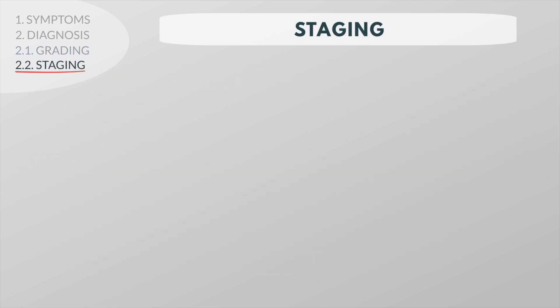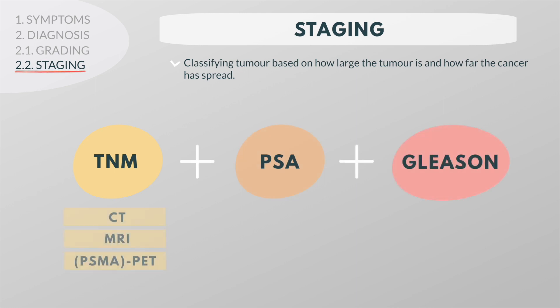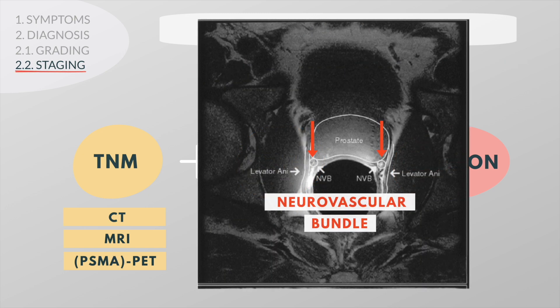The cancer stage explains how large the primary tumor is and how far the cancer has spread in the patient's body. Doctors assign the stage of the cancer by combining the TNM classification, the PSA level, and the Gleason score. Imaging techniques such as CT, MR, and PET-CT may aid in the staging by evaluating the location and extent of the tumor. MRI is often used for surgical planning, specifically to define the relationship of the tumor to the neurovascular bundle and to determine the need of sacrificing the nerves.